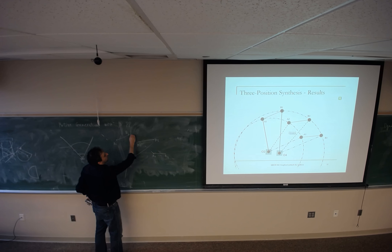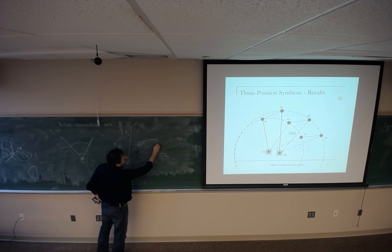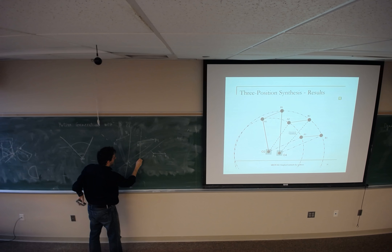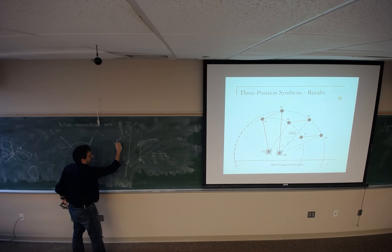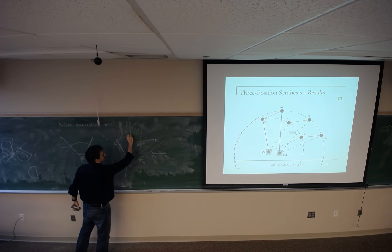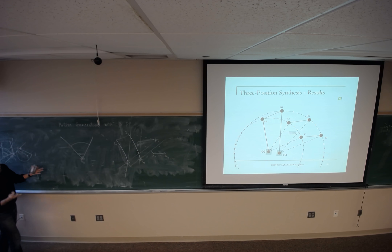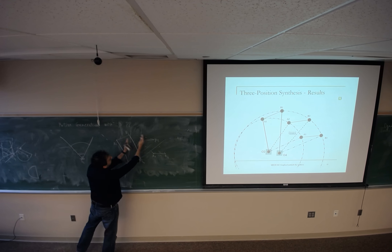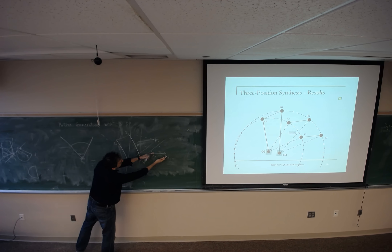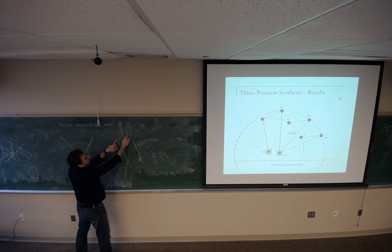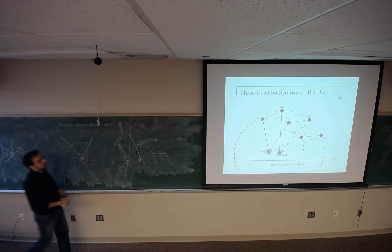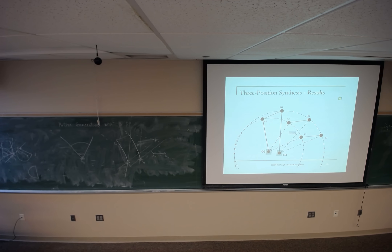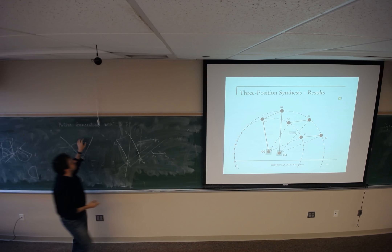Do the same thing for O4: draw perpendicular bisectors for B1B2 and B2B3 and find their intersection to locate O4. Now this is going to be the mechanism: O2, A, B, O4. When it's moving through positions 1, 2, and 3, the points A1B1 go to A2B2 and then to A3B3 — our three desired locations.